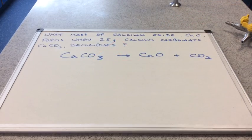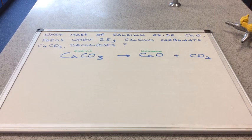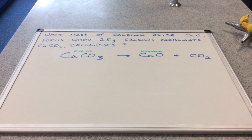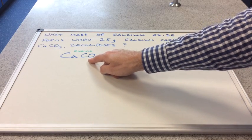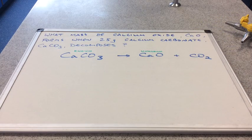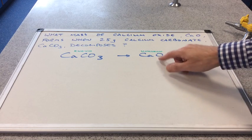We'll start with a simple question. What mass of calcium oxide CaO forms when 25 grams of calcium carbonate CaCO3 decomposes? I've written 'known' above calcium carbonate and 'unknown' above calcium oxide, because we're told how many grams of calcium carbonate we've got, and we need to find out what mass of calcium oxide can form.